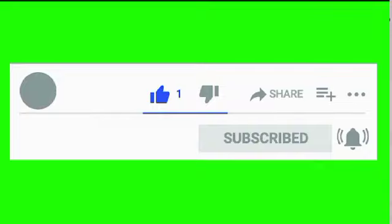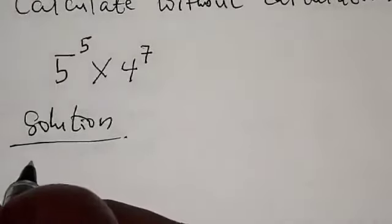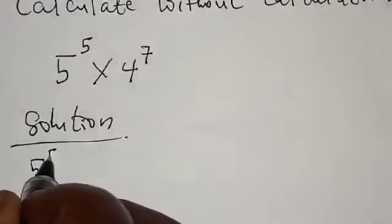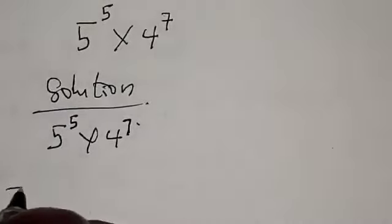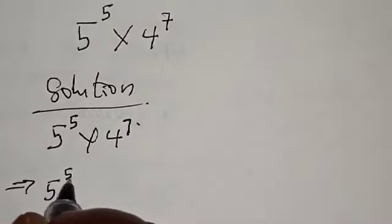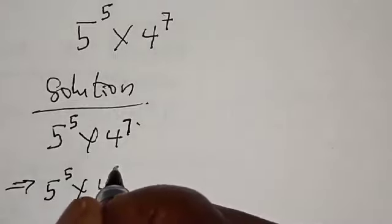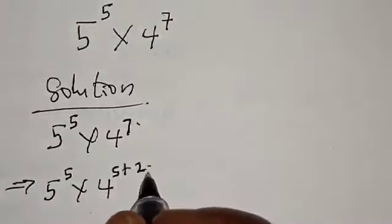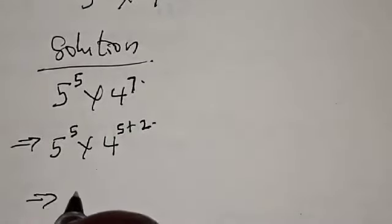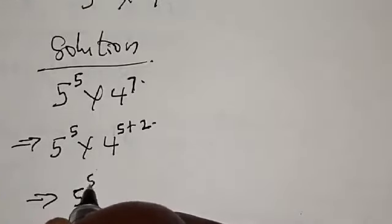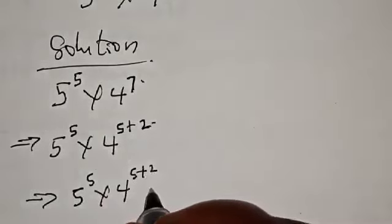Solution. We have 5 raised to power 5 multiplied by 4 raised to power 7. This can be expressed as 5 raised to power 5 multiplied by 4 raised to power 5 plus 2, since 5 plus 2 equals 7. So this implies that we have 5 raised to power 5 multiplied by 4 raised to power 5 plus 2.